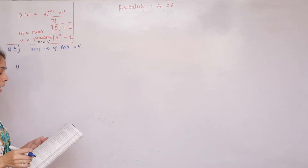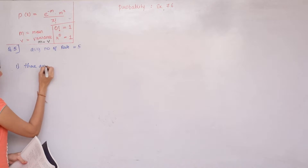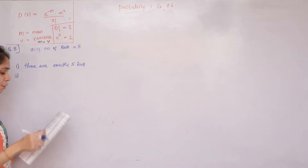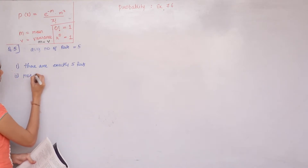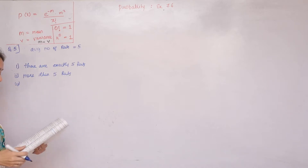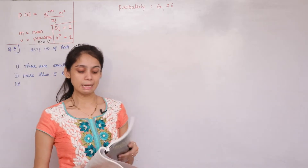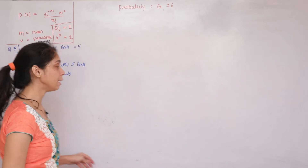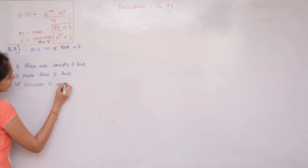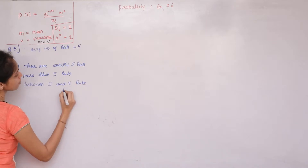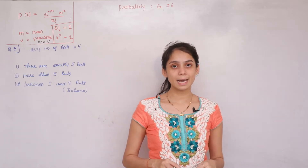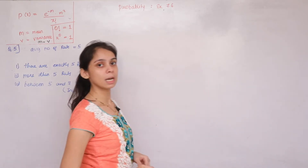Three conditions are to be found. First: there are exactly 5 reds. Second condition: there are more than 5 reds. Third condition: there are between 5 to 7 reds, inclusive — meaning 5 and 7 are both included. All three conditions are to be solved using Poisson distribution.